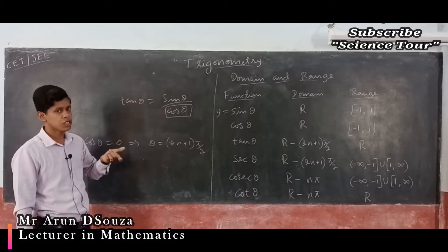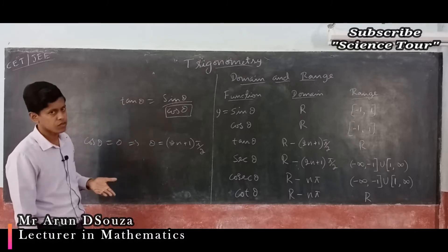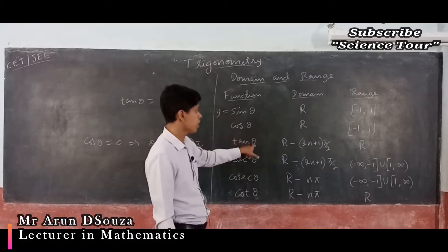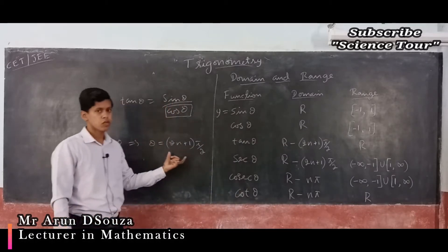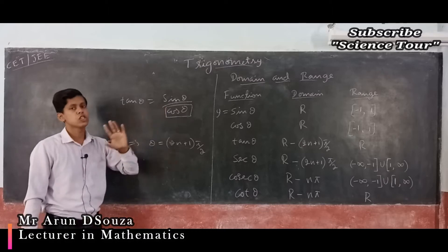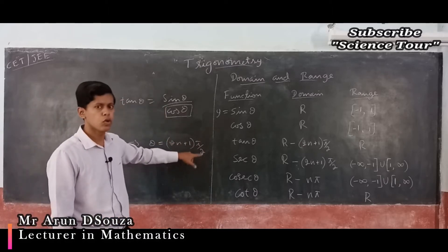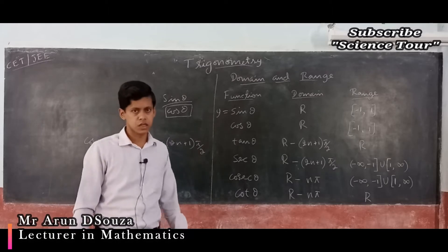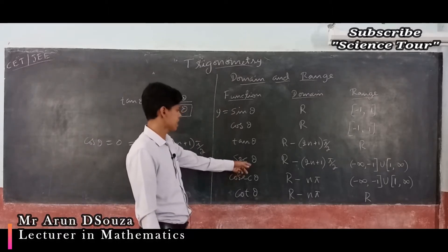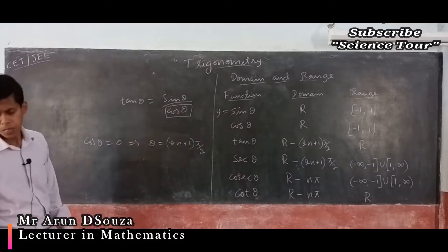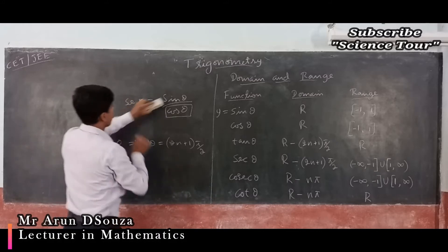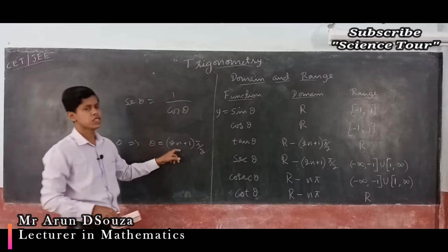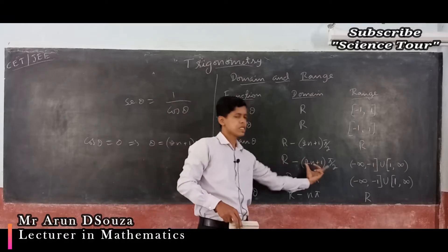So for tan θ, avoid putting 90°, 270°, or any odd multiple of 90°. For sec θ, which is 1/cos θ, the denominator should not be 0, so again, all real numbers except odd multiples of π/2. For cosec θ, which is 1/sin θ, we need sin θ ≠ 0. Sin θ = 0 when θ = nπ (i.e., 0, π, 2π, 3π, …), so avoid those values.